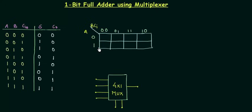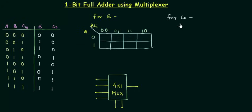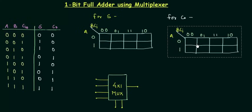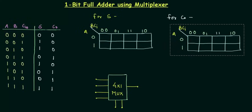One difference from the previous presentation is that there was only one output F, but in this case we are having two outputs: Sum and Carry Output. So what I need is another K-map — this K-map is for Sum. Now I want another K-map for the Carry Output.